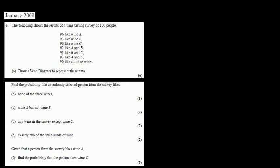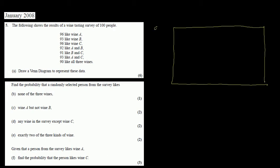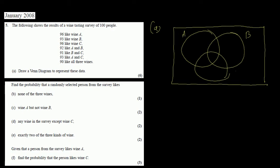This is Jan 2008 and the first question is a Venn diagram sum. We have to draw a Venn diagram with sets A, B and C. This is set A, this is set B and this is set C.